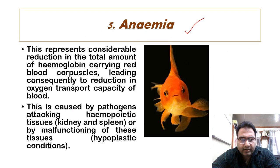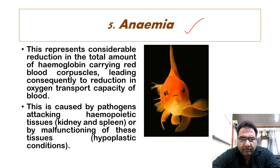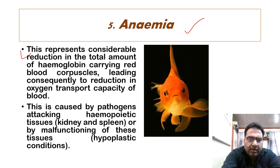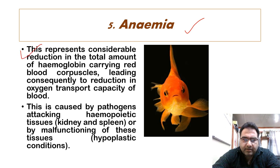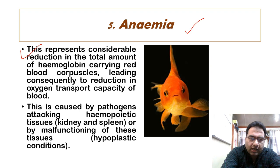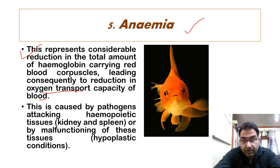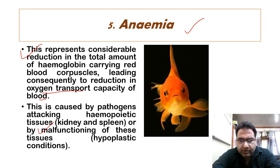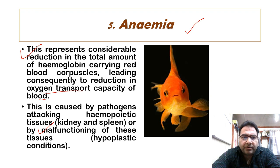Then we have anemia. As we know, this refers to less hemoglobin in the blood, and anemia represents a considerable reduction in the total amount of hemoglobin-carrying red blood corpuscles, consequently leading to a reduction in the oxygen transport capacity of the blood. This can be caused by pathogens which attack the hematopoietic tissues of the kidney and spleen, or it may be because of malfunctioning tissues or hypoplastic conditions.